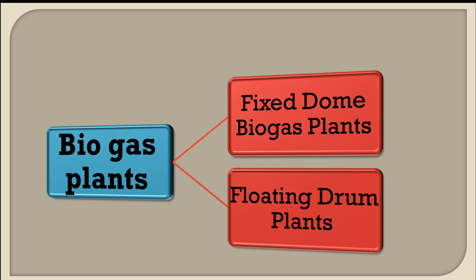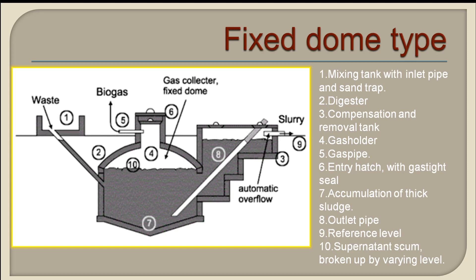This is a fixed dome type biogas plant. As the name suggests, the dome of this plant is fixed, and the entire digester is placed underground, below the ground level. This is similar to the schematic diagram shown in the previous session. There is an intake line where we can feed the biomass, a slurry outlet, and the biogas is taken out through the gas holder.